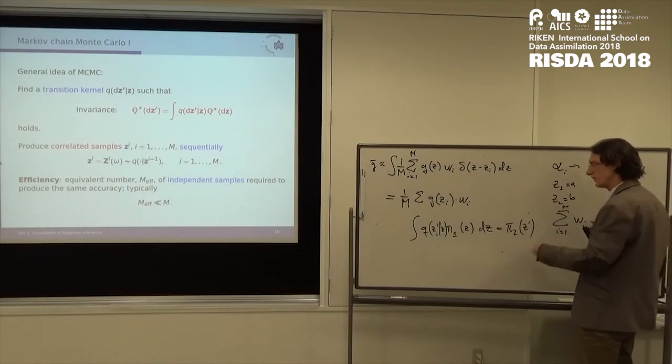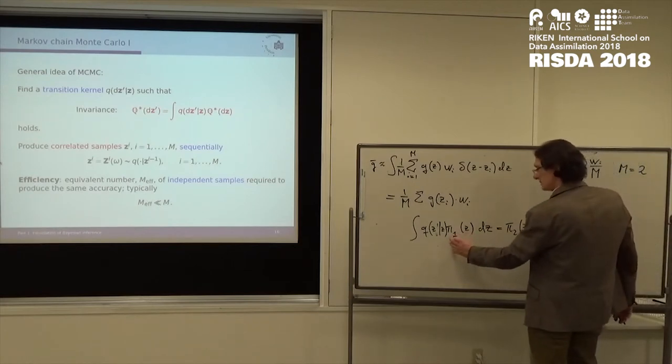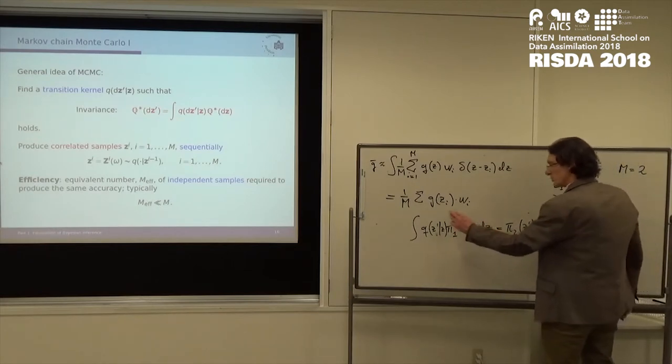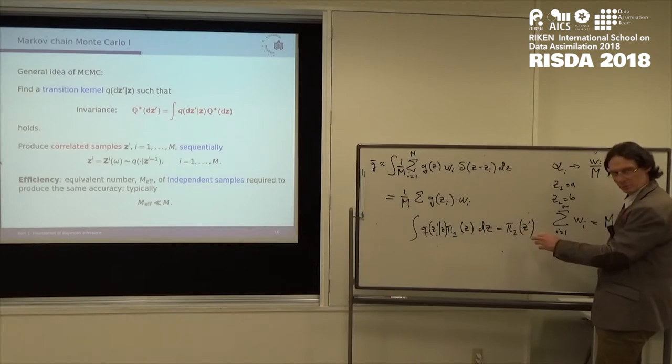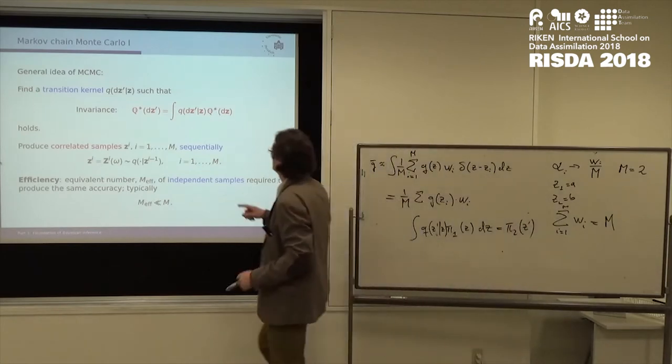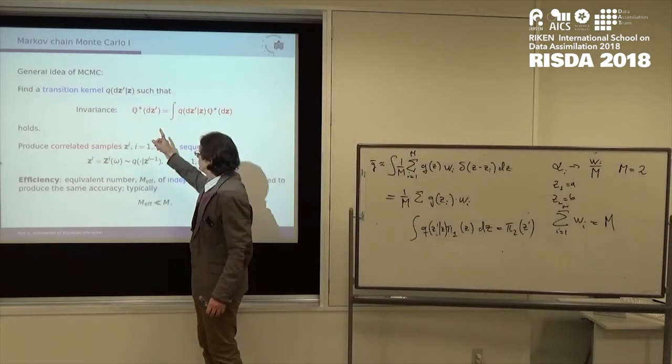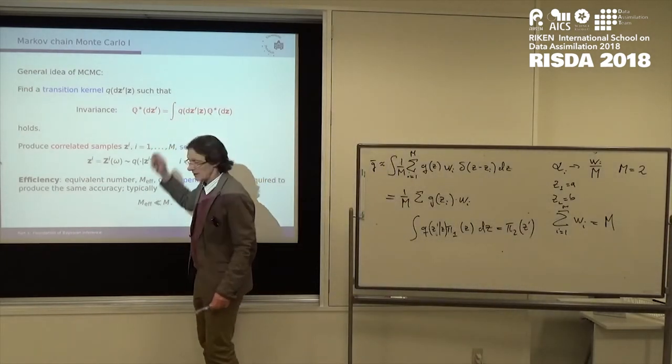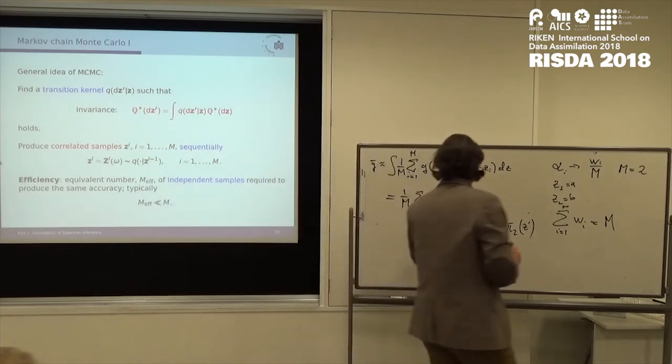Again, what you have here looks a bit like Bayes, right? So you have a conditional, you have the distribution in Z, so this is actually a joint distribution in Z dash and Z. And then you integrate out the Z variable, so you're left with the marginal in Z dash. And that gives you a dynamic. So this gives you an iterative description how, taking some distribution, you can turn that into yet another distribution.